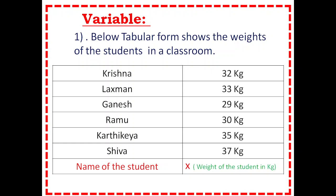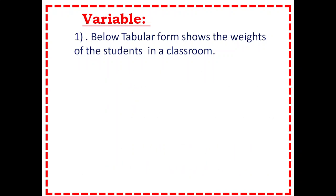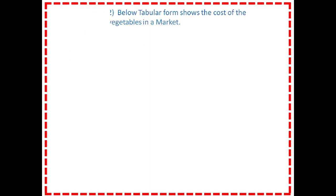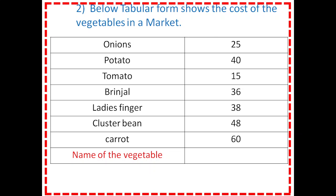Usually, we write this table with X representing the unknown weight. Let's observe another table — it shows the cost of the vegetables in a market: onions 25 rupees per kg, potato 40 rupees, tomato 15 rupees, brinjal 36 rupees, lady's finger 38 rupees, cluster bean 48 rupees, and carrot 60 rupees.